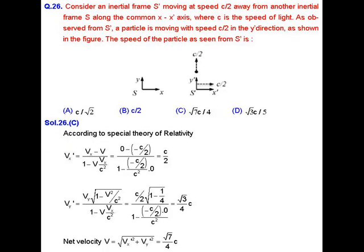MCQ question number 26. In this question we are given an inertial frame S prime moving at a speed c by 2 away from another inertial frame S along the common x x prime axis, where c is the speed of light. As observed from S prime, a particle is moving with the speed c by 2 in the y prime direction as shown in figure. In this question we have to find out the speed of the particle as seen from S prime.